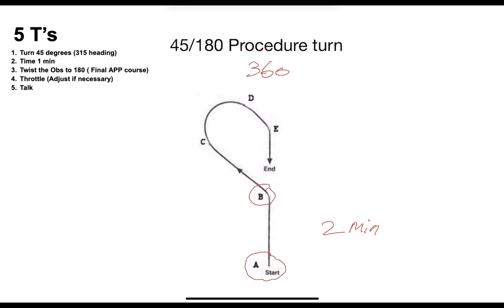So if we're flying a 360 heading, we will be turning left to fly to section C on a 315 heading. That's the first T which is turn. Then we're gonna time a one-minute leg on this particular procedure.